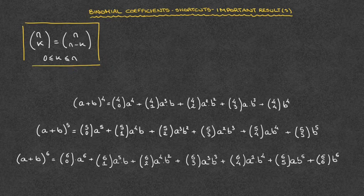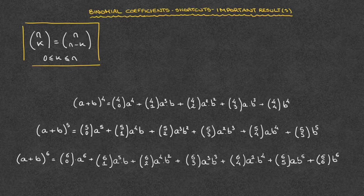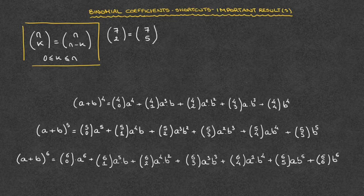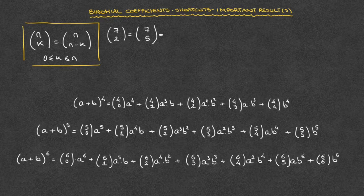This result looks much more complicated than it actually is, so let me give you some examples to illustrate what it's saying. Let's say we're dealing with the binomial coefficient 7 choose 2. This result tells us that 7 choose 2 must equal 7 choose 7 minus 2, which is 7 choose 5. Check with your calculators — both the binomial coefficient 7 choose 2 and 7 choose 5 equal 21.